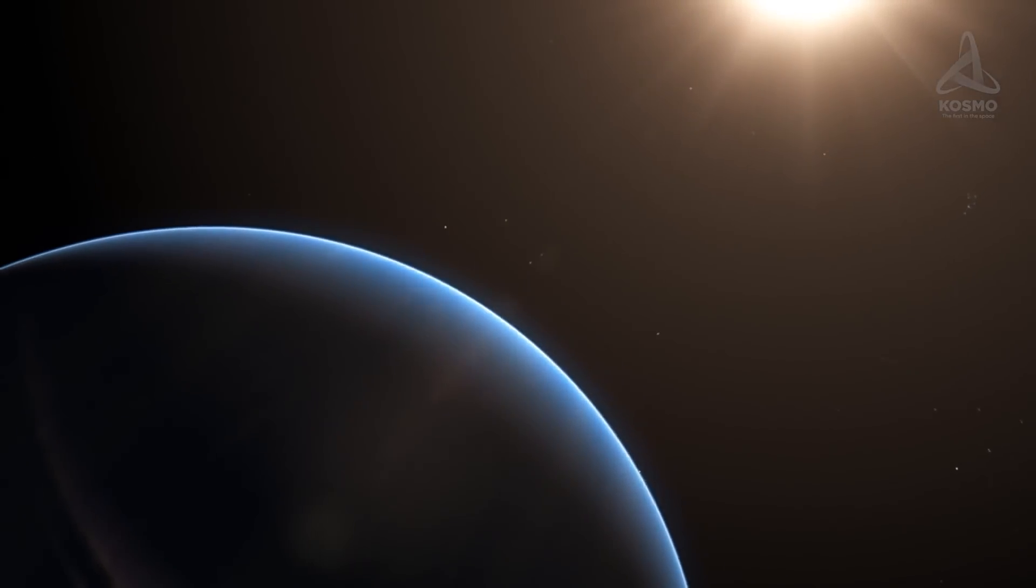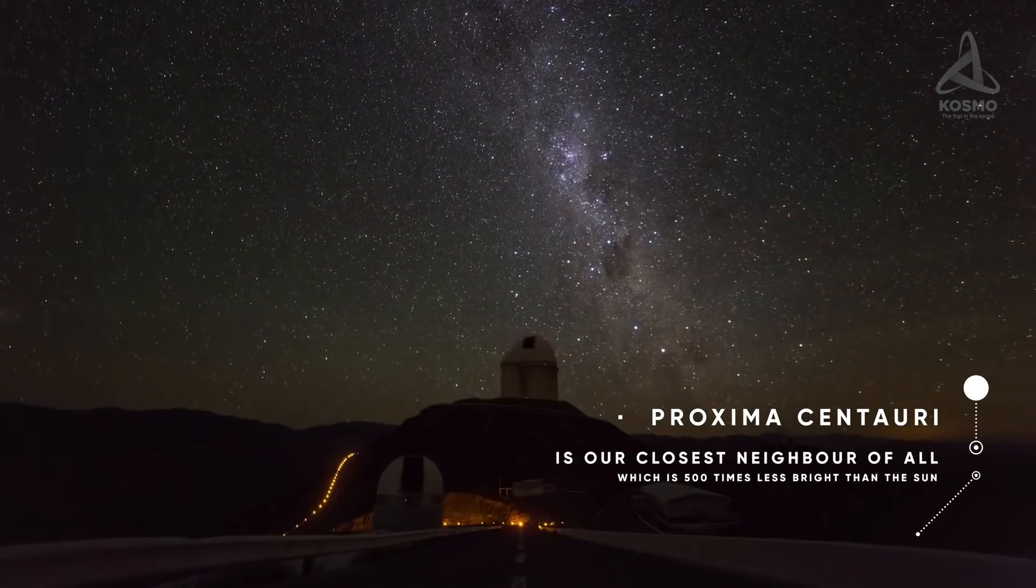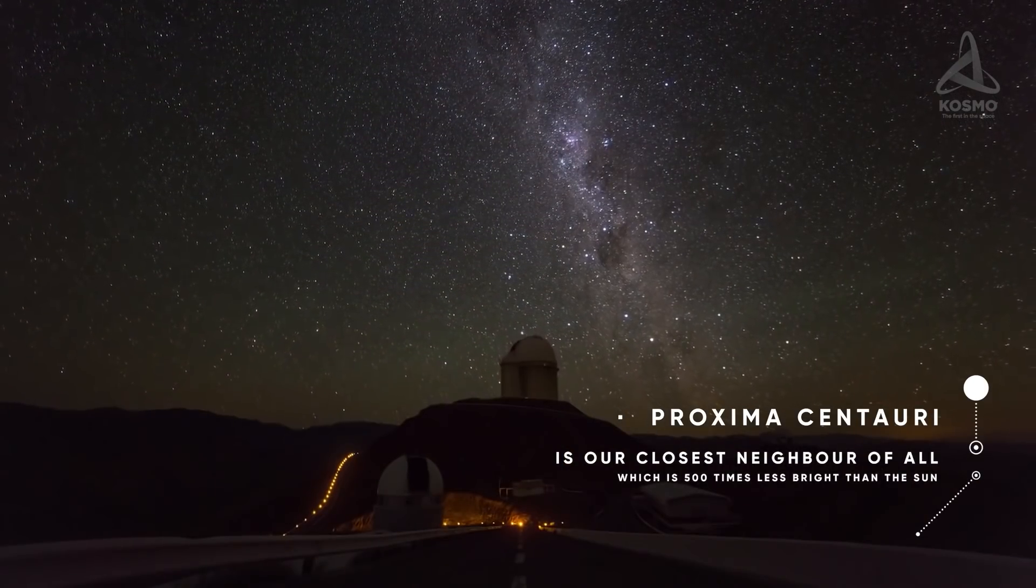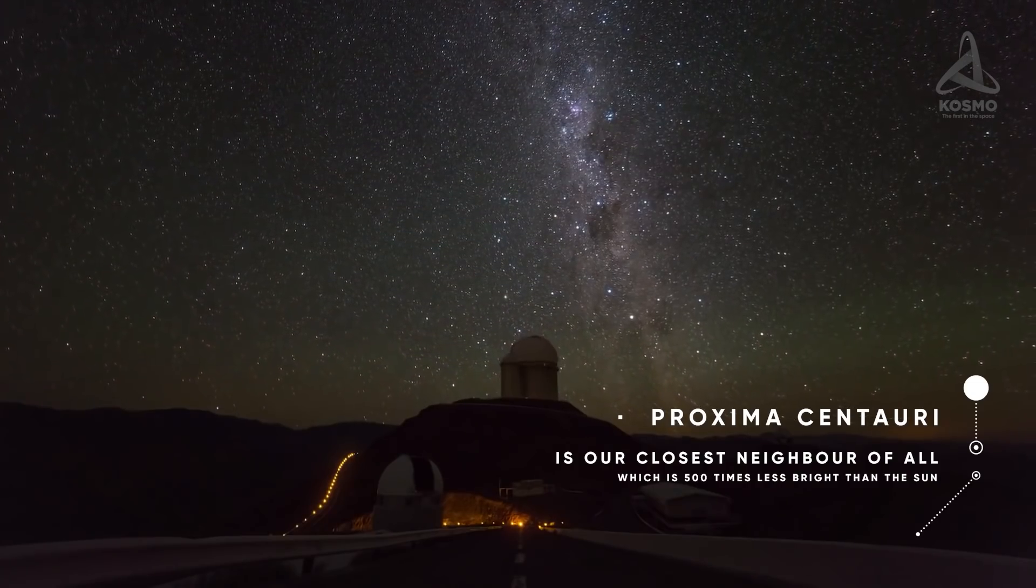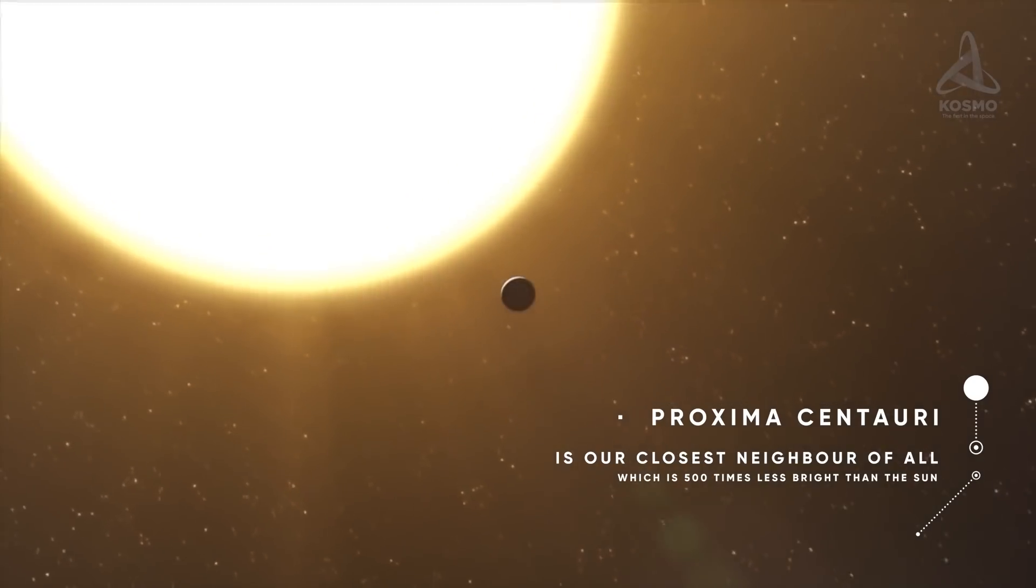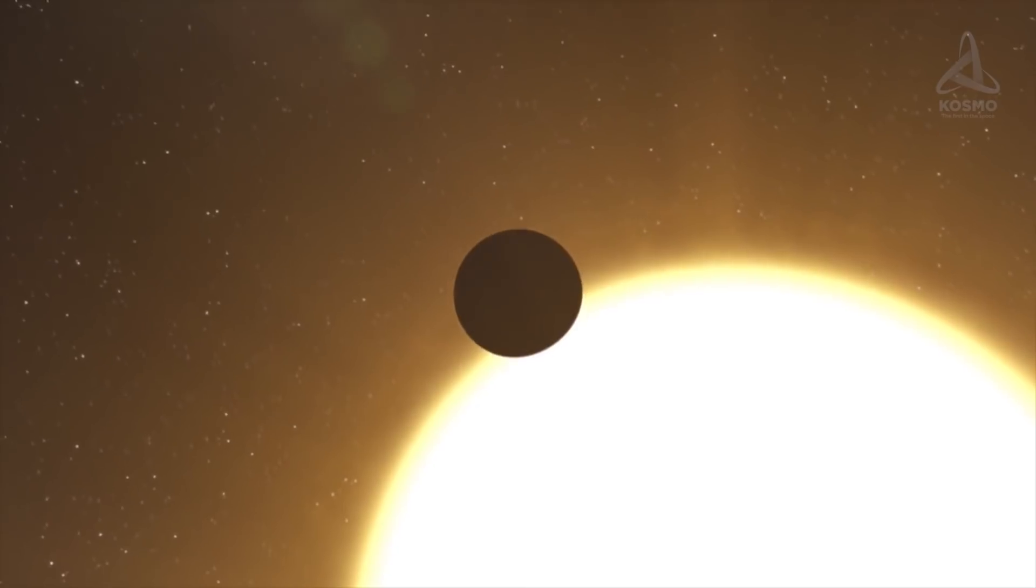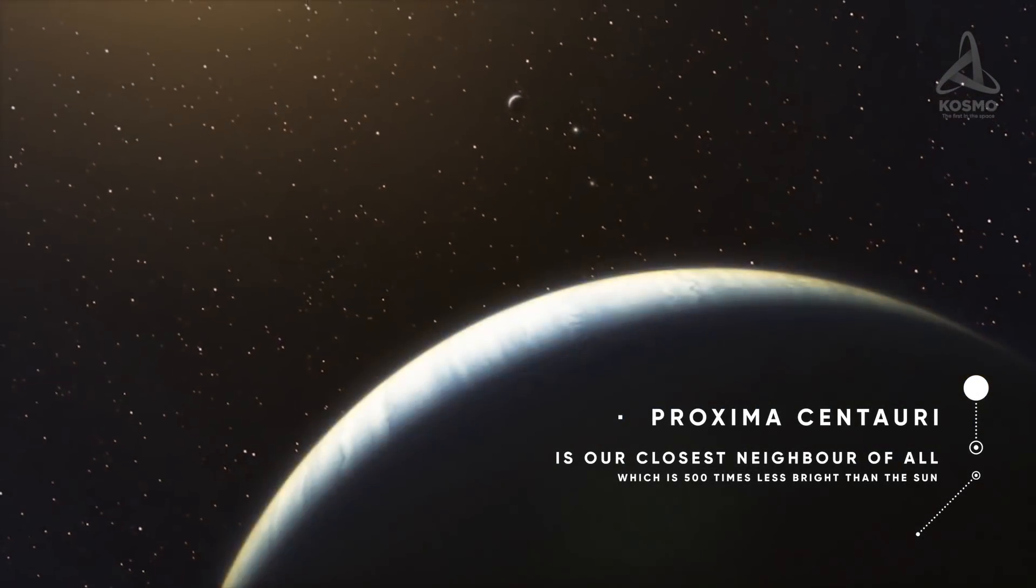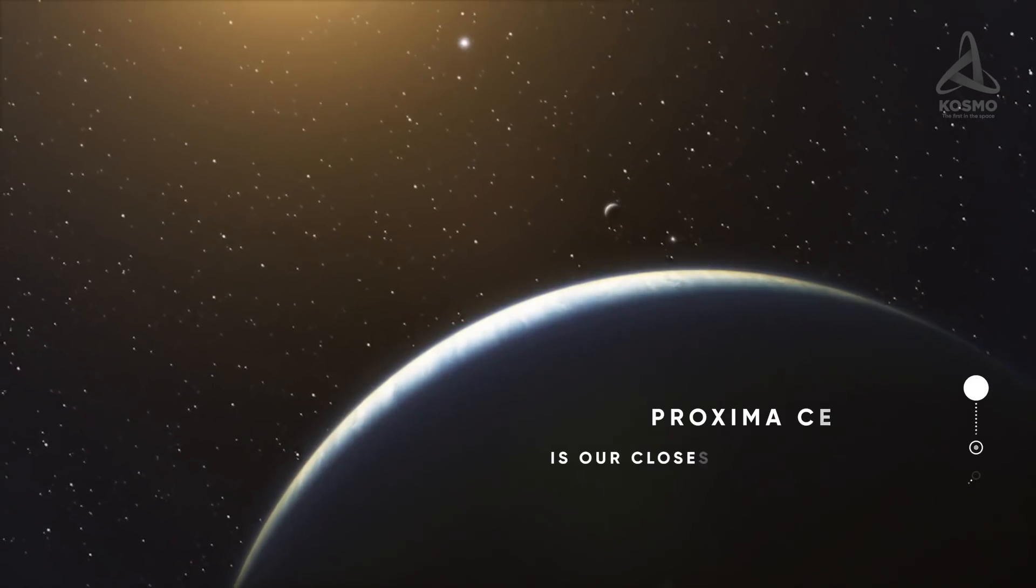Proxima Centauri is our closest neighbor of all, which is 500 times less bright than the Sun. It is one of those secretive ones that are invisible to the naked eye. That could be the reason why this object was discovered only in 1915.